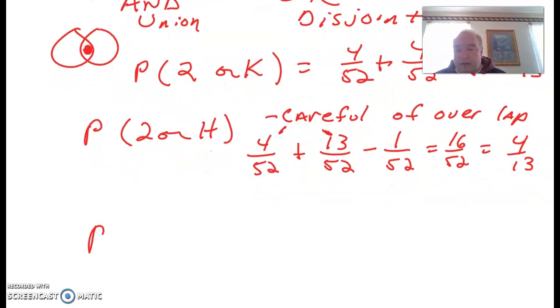So, what's the probability of getting a 2 and a king? Well, because it's impossible, this is no. All right. It's not possible to get a 2 and a king on a draw.